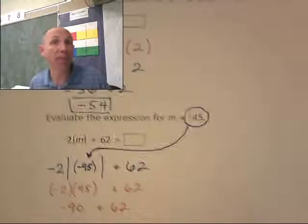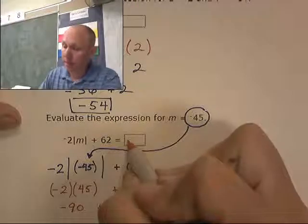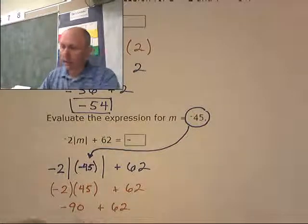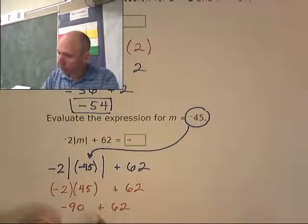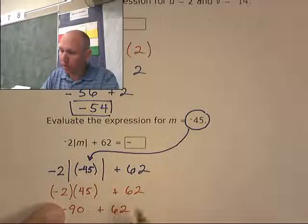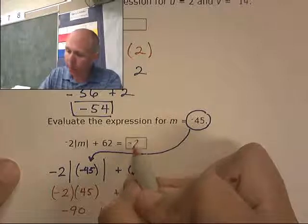My answer is going to be a negative. So what's it take me to get from a 62 up to a 90? 62, 72, 82. What's that? 28. Negative 28.